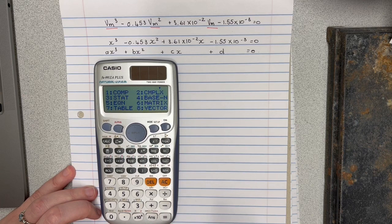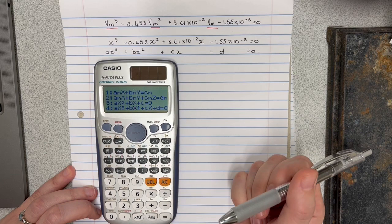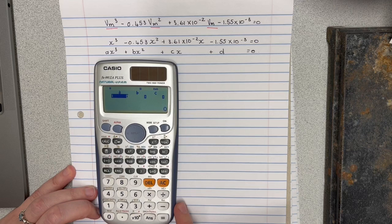So I'm going to go to mode and I'm going to pick number five to say that I want to solve an equation, and then I'm going to pick the form of the equation that I'd like to solve. I'm going to pick number four because this is a cubic equation that I'd like to solve.